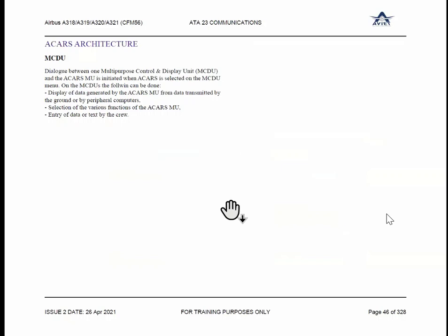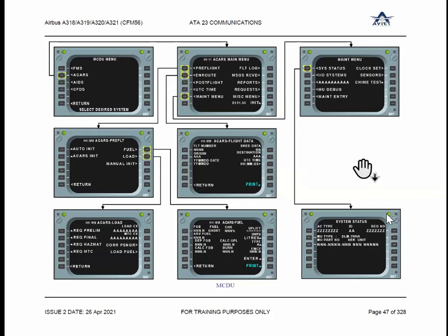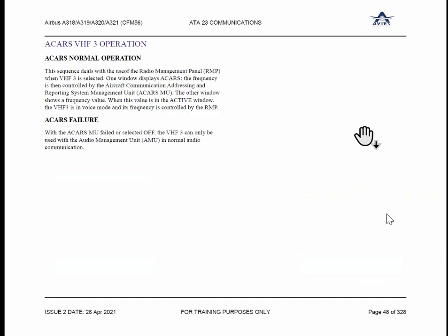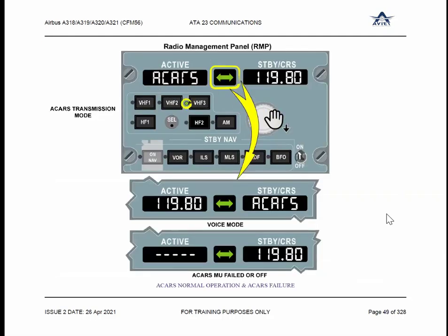The architecture is the same. All these menu options are the same as ACRS. Now you will find ATSU Air, not ACRS. The rest of the things are pre-flight, in-route, post-flight, UTC timing, maintenance menu, flight log — all these options are available in the new ATIMS, Air Traffic Information Management System. This is RMP. In case of ACARS failure, the ACARS management unit failed or selected off, VHF3 can only be used for audio management in normal mode communications.